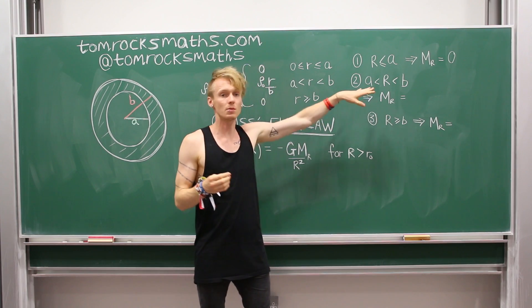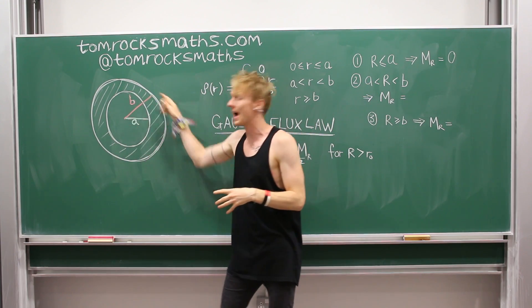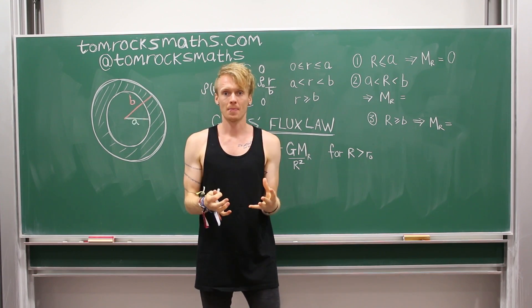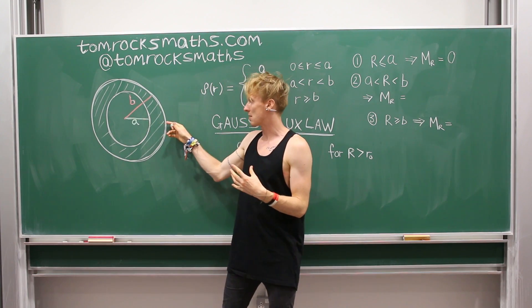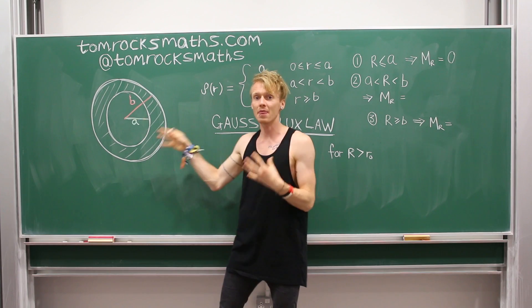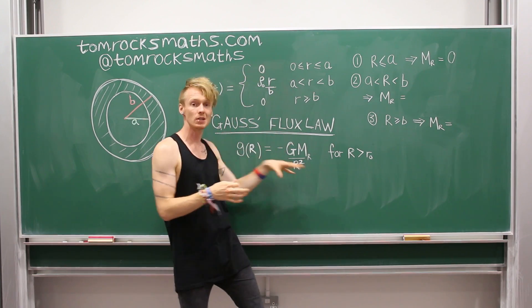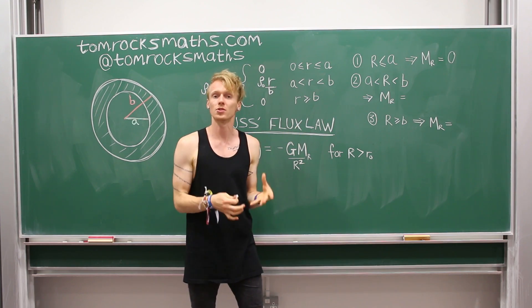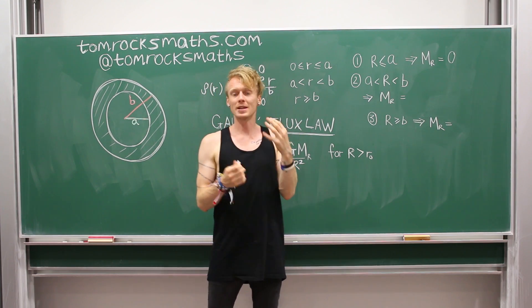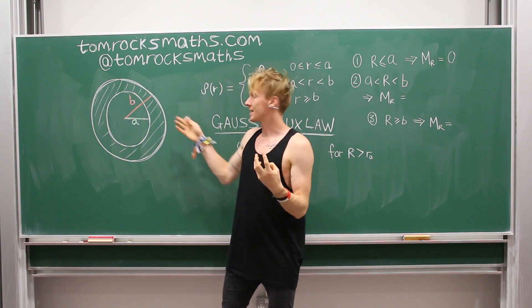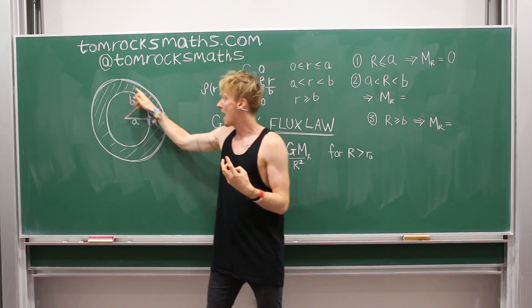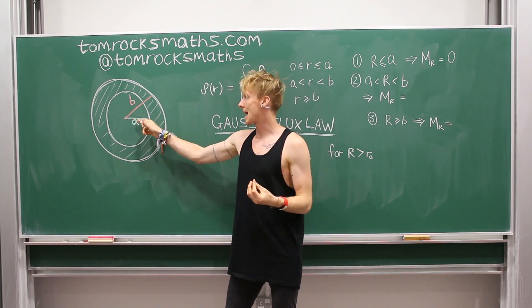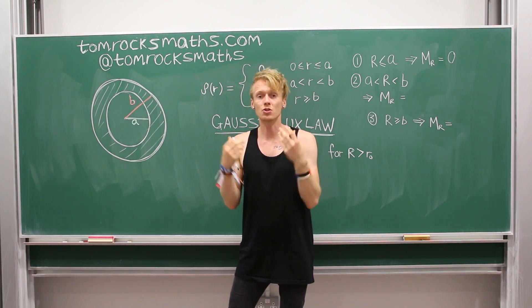For the second case, where we are now inside the shell, this is a bit trickier, because we do now have mass. And as we move further out, the mass will increase, and therefore the gravitational field will change, because it depends on the mass. So if the mass changes, the field must also change. And so we need to work out the mass that's contained within a disk of radius capital R, where R lies between A and B.